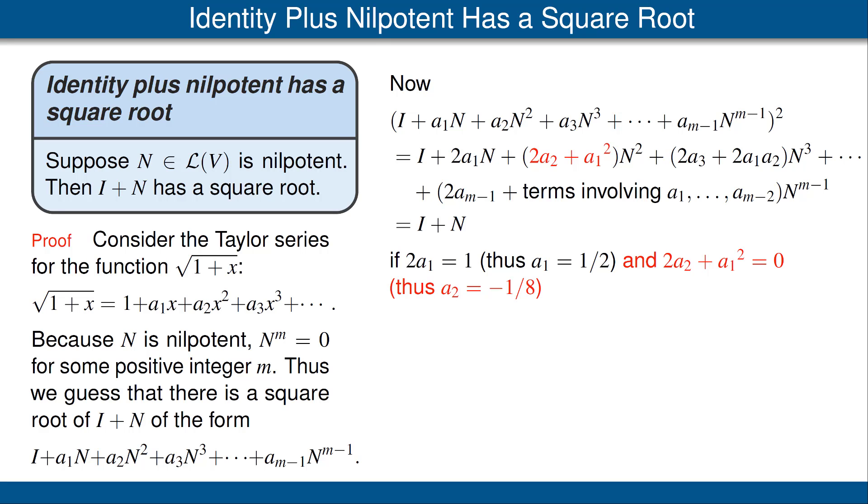And then we need the coefficient of N squared, which is now in red above, to be 0. We've already chosen a₁, it's a half, although that doesn't matter, the specific value, because we can now solve the equation 2a₂ plus a₁² equals 0. For a₂, we get a₂ equals -1/8.